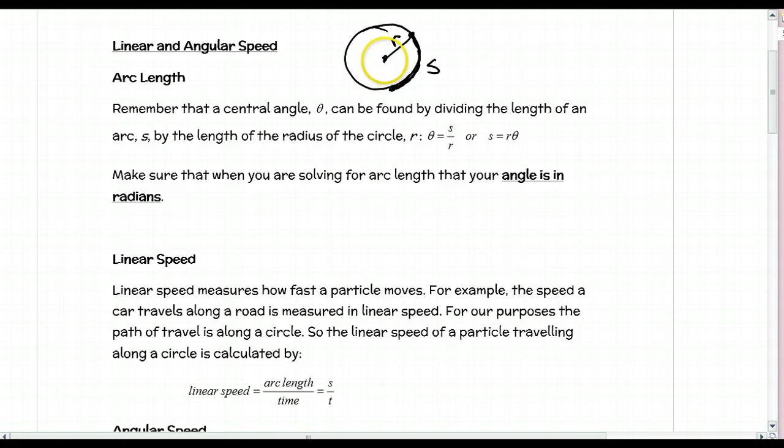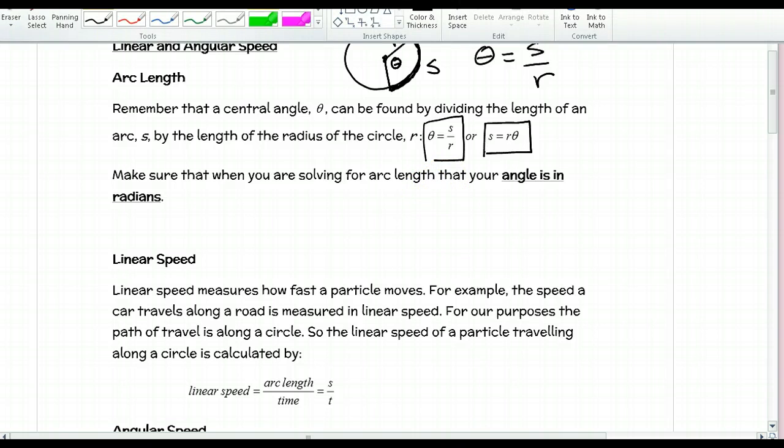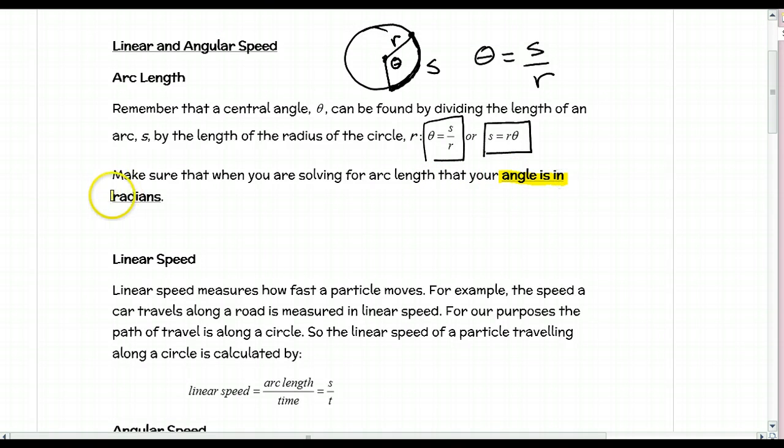If I draw a radius to each end of the arc, the angle theta can be calculated in radians by taking s divided by r. We can solve for s if we know the radius and angle. Make sure when solving for arc length that your angle is in radians. It's bold, underlined, and highlighted - that's important.